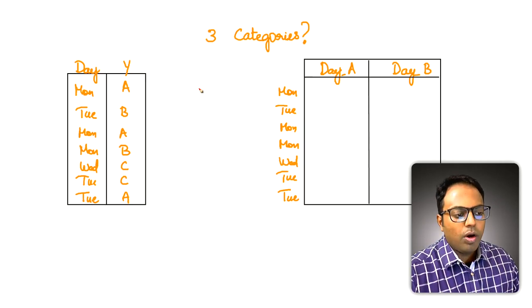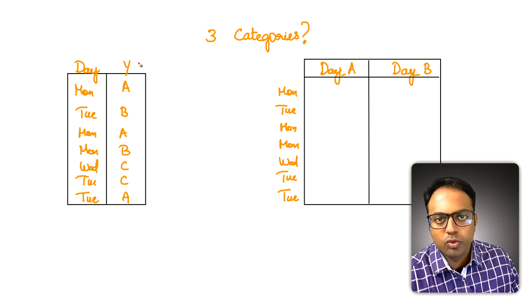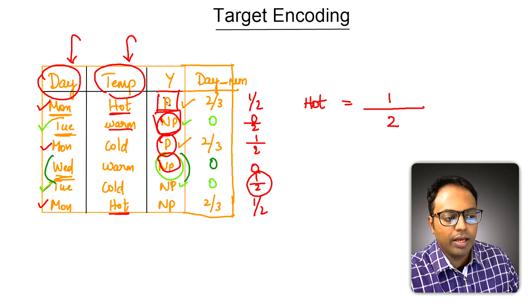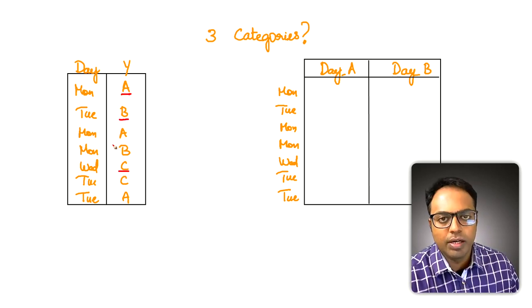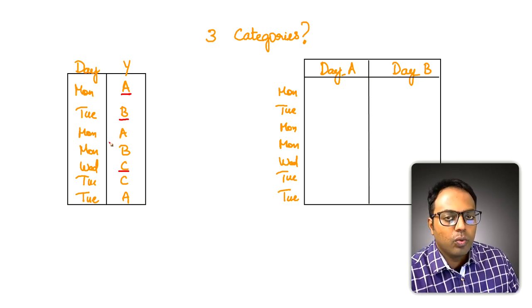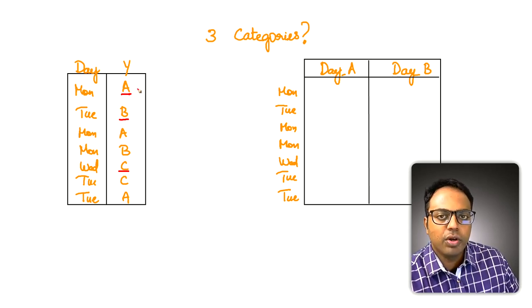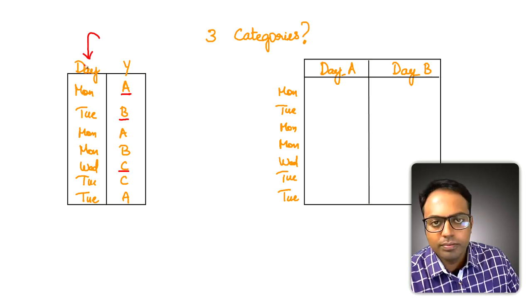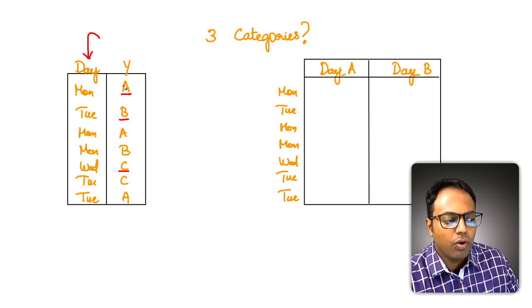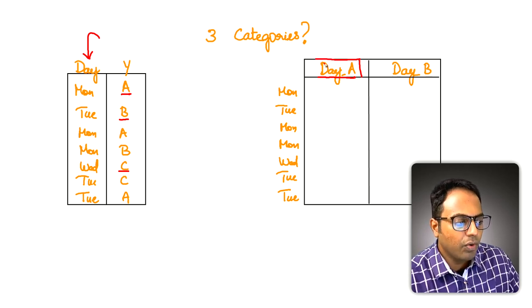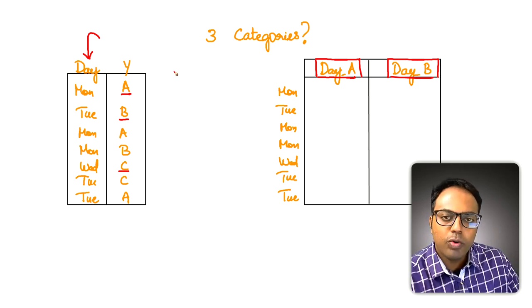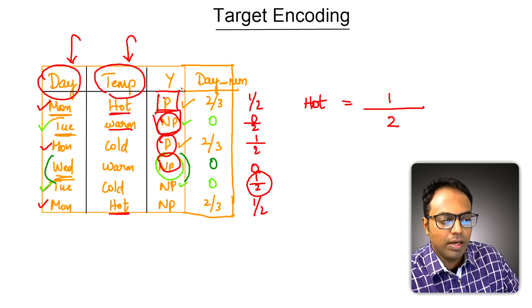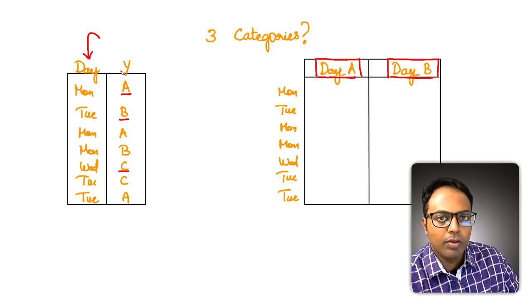Now let's look at another case: what if the response variable y contains more than two categories? Previously y could be either 'played' or 'not played'. Now y can have three possible values: a, b, or c. What would we do in this case? We can create a version of the day column for each possible value of y — a target encoded variable for a and one for b. We are not doing it for c, and we will see the reason for that shortly.